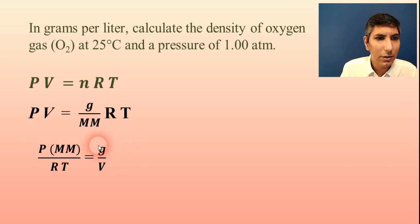So now, G over V, that's my density. So to find the density, all I have to do is take pressure in atmospheres times molar mass divided by RT. And that's it.